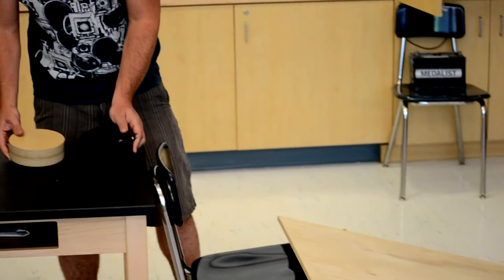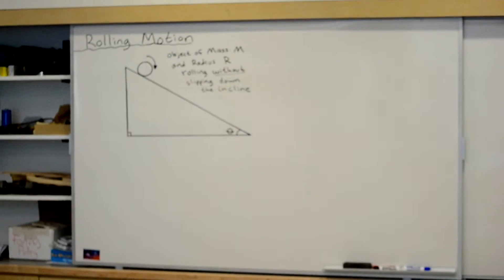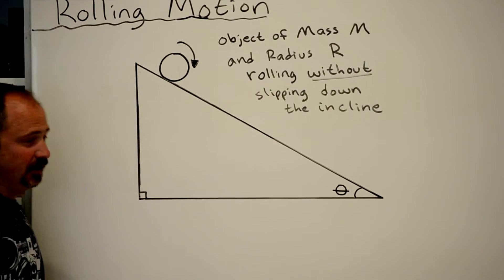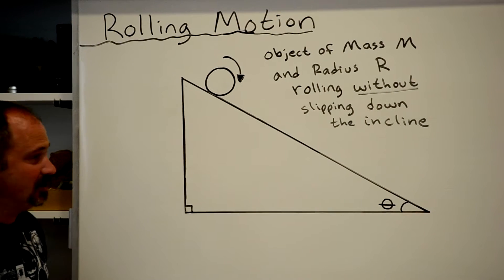Before we do this exciting race, let's do some calculations so we can make a prediction. So here's our situation, an object rolling down an incline. And the first thing to do always is to draw all the forces acting on that object.